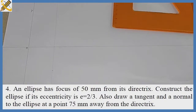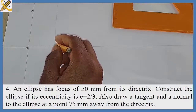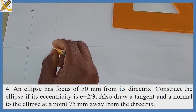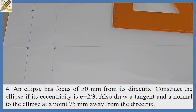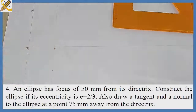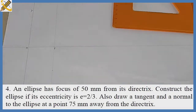The eccentricity of our ellipse is 2/3. Take note: the eccentricity of an ellipse is always less than one. We are going to divide the distance between this point and the focal point F. We divide the distance between point F and M into five equal parts, because 2 plus 3 is 5. Since the distance between M and F is 50mm, dividing it into five equal parts gives 10mm each.